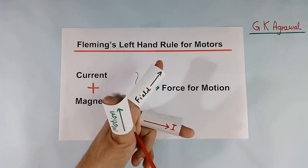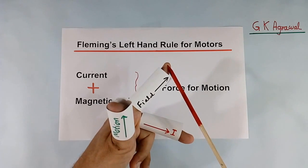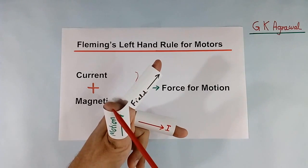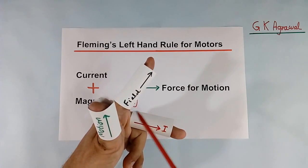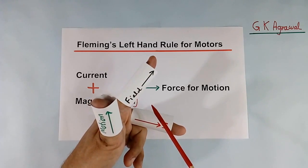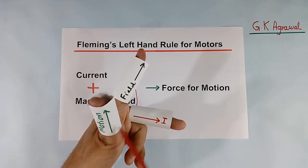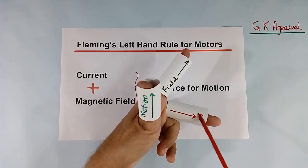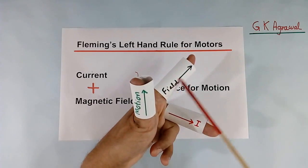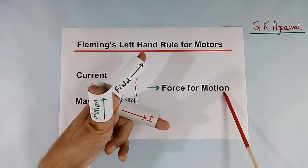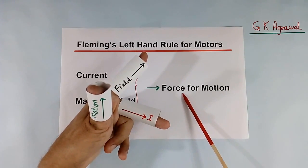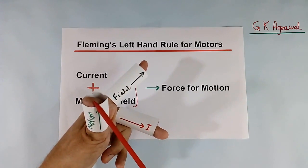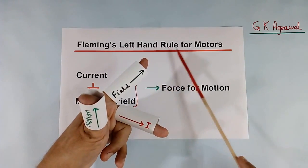This is my left hand — the Left Hand Rule. These two are fingers and this is the thumb. If I keep these two fingers and thumb in such a way that all three have a 90-degree angle with each other, and if the current direction is this, and the magnetic field direction is this, then force and motion can be generated. The direction for force and motion will be in the direction of the thumb. That is Fleming's Left Hand Rule for Motors.